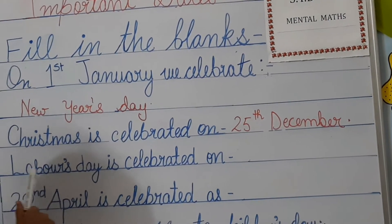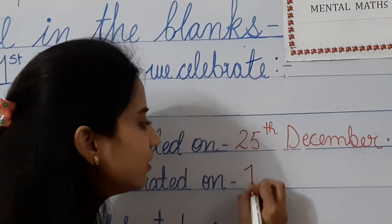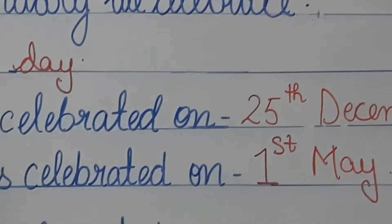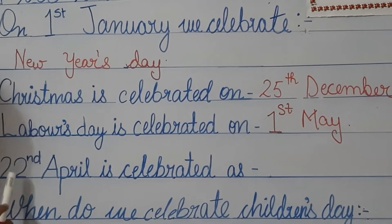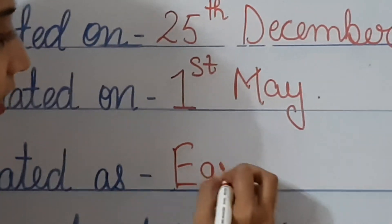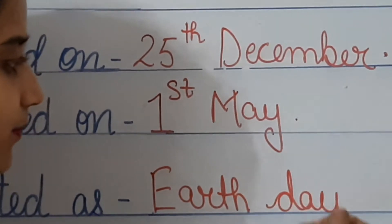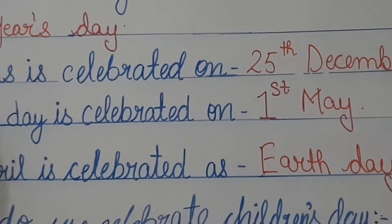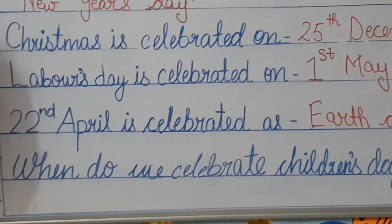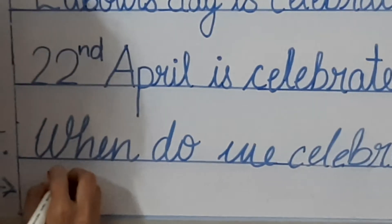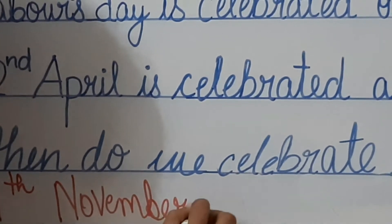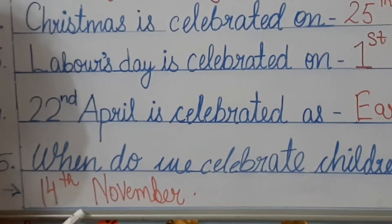Next question: Labour's Day is celebrated on 1st of May. We also call it May Day. Next, 22nd April is celebrated as Earth Day — we dedicate this day for our Mother Earth. Number 5: when do we celebrate Children's Day? On 14th of November, as we celebrate the birthday of Pandit Jawaharlal Nehru.